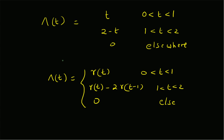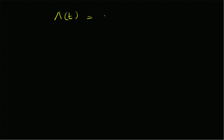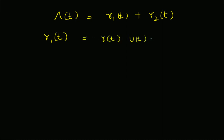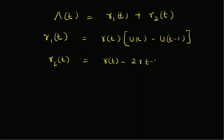For generating purposes, we write triangle(t) as two components: r1(t) plus r2(t). r1(t) is the ramp signal in the first interval, written as r(t) multiplied by a rectangle in that time support — that is, r(t) multiplied by u(t) minus u(t minus one), so outside the support from zero to one it will be zero. r2(t) can be written as r(t) minus two times r(t minus one), with time support u(t minus one) to u(t minus two), giving the window from one to two.